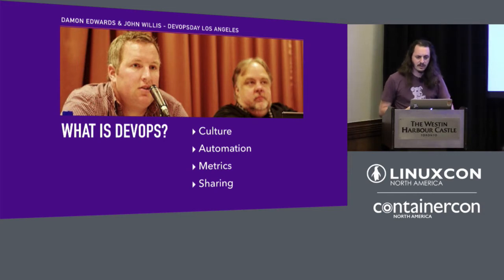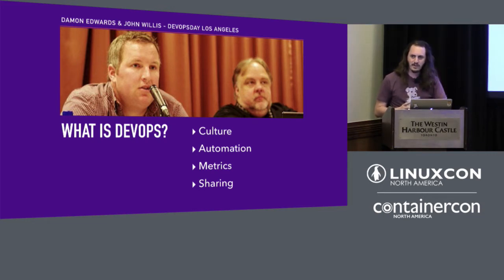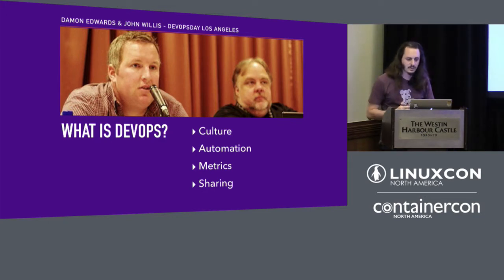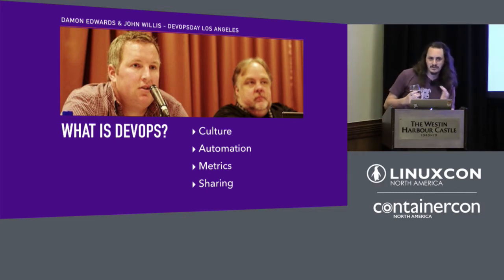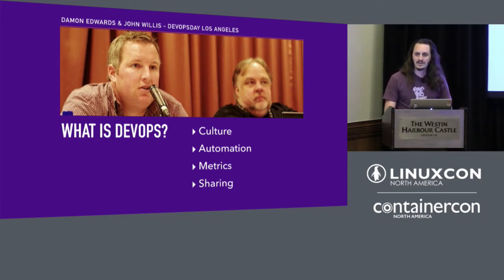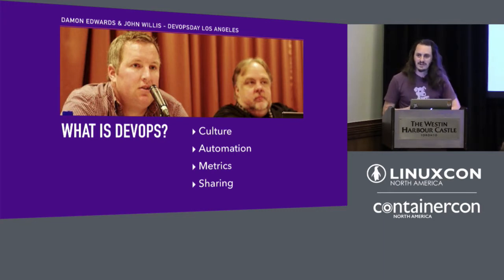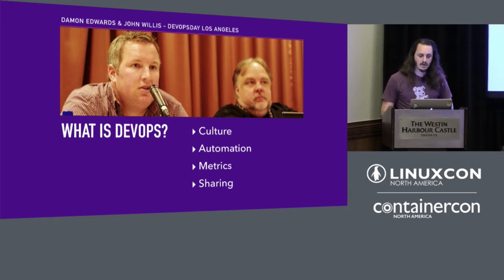I also like to define DevOps in my talks. John Willis and Damon Edwards coined the acronym CAMS — Culture, Automation, Metrics, and Sharing — as the four pillars of DevOps. Culture is the idea that we're working together, seeing the problem as the enemy, not each other. Automation is scaling with code rather than people. Metrics is measuring what we're doing so we know if we're getting better or worse. And Sharing means taking our learnings back to help each other be more successful.